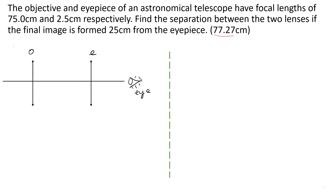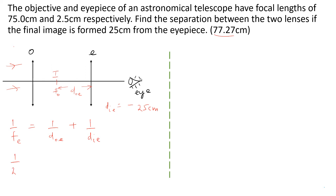For this telescope, rays come from infinity, so the image is formed at the focal point of the objective lens — that is F-O. This intermediate image becomes the object for the eyepiece, so the object distance for the eyepiece equals F-O. The image distance for the eyepiece is negative 25 centimeters. Using the lens formula: 1 over Fe equals 1 over D-object-eyepiece plus 1 over D-image-eyepiece, we get 1 over 2.5 equals 1 over D-object-eyepiece plus 1 over negative 25.